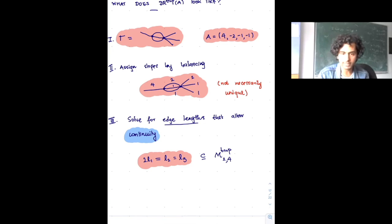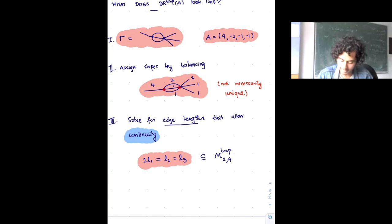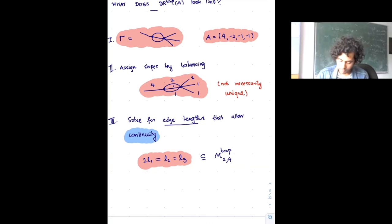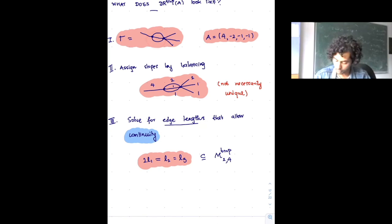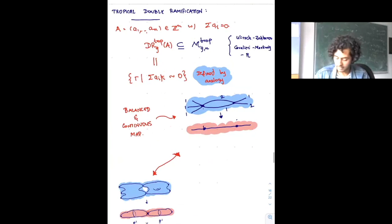I solve for these edge lengths that allow the continuity relation and find there's an interesting subset, in this case in M_{2,4}^{trop}. This is just a very simple three-step procedure that picks out exactly some subset of M_{g,n}^{trop} — the tropical double ramification cycle. At this point we're playing a game of asking whether something makes sense in a purely combinatorial world, and it seems to pick out some subset with a non-trivial condition.